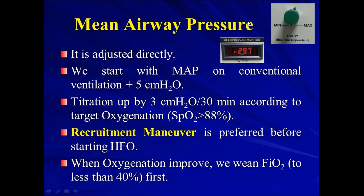Regarding mean airway pressure, it's adjusted directly. We start with the mean airway pressure on conventional ventilation plus 5 cm of water. The patient has already failed on conventional ventilation, so this is rescue therapy for hypoxemia. For example, if his mean airway pressure was 25 on pressure control or volume control, when we shift him to high frequency we start with 30 — that is 25 plus 5.